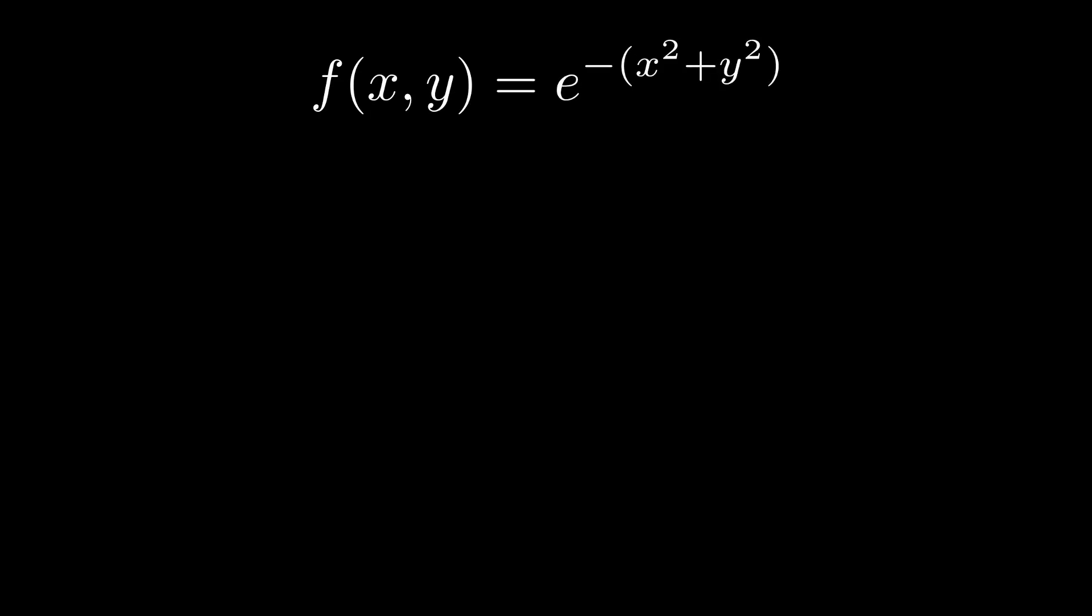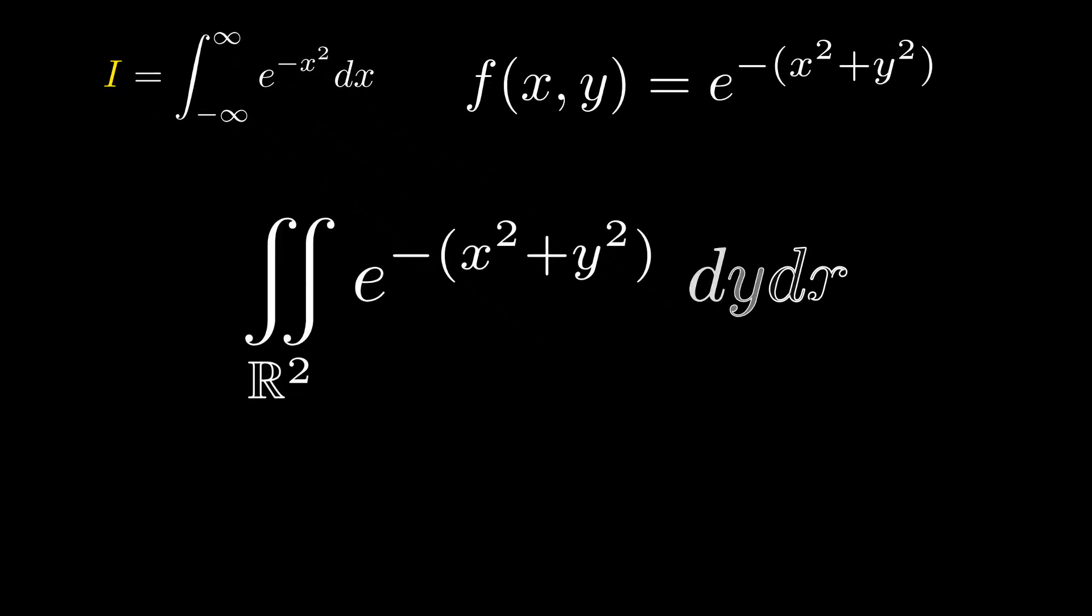For now, let's assign the variable i to the integral from negative infinity to infinity of e to the negative x squared dx. Instead of calculating this, let's try to calculate the double integral over all 2D real of e to the negative x squared plus y squared.